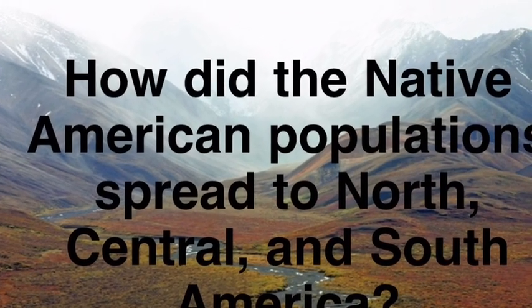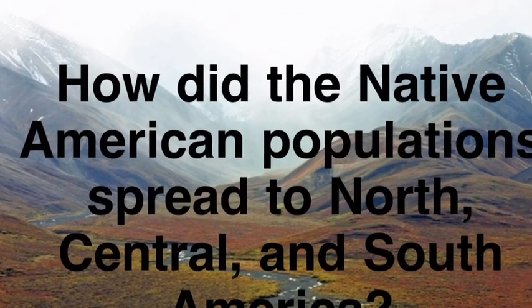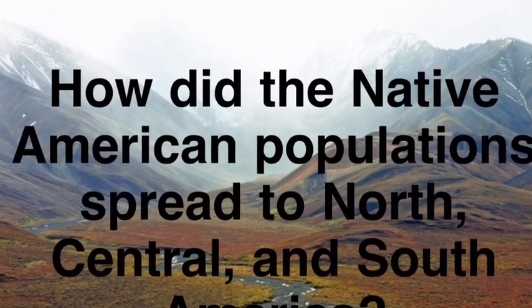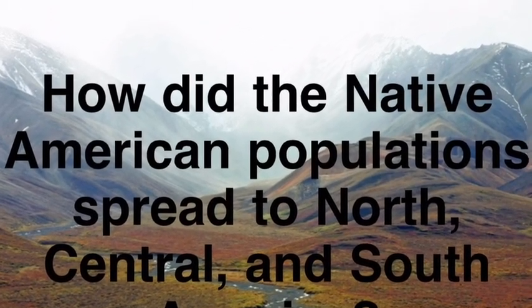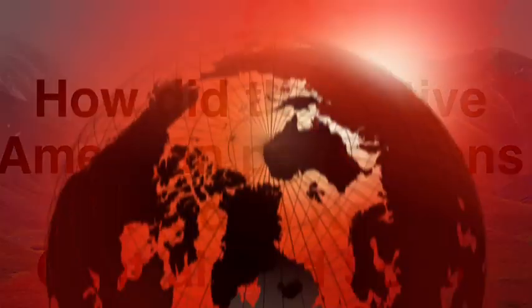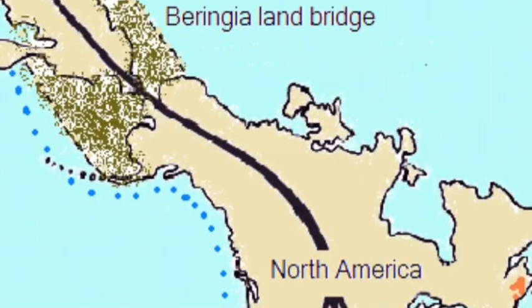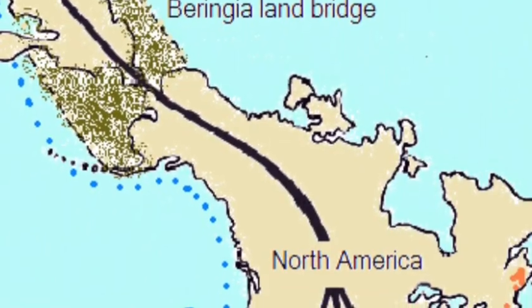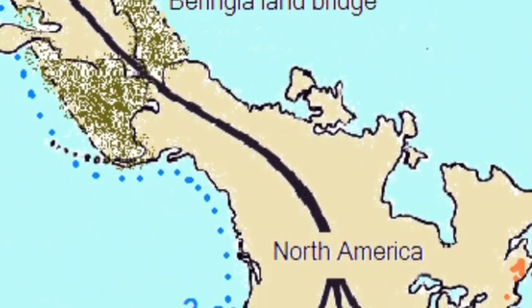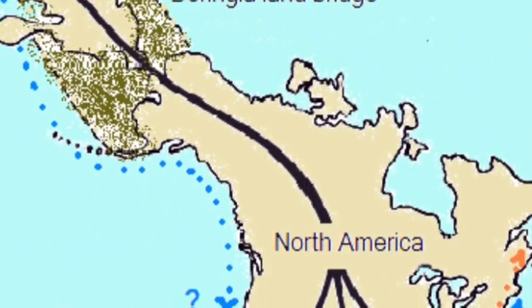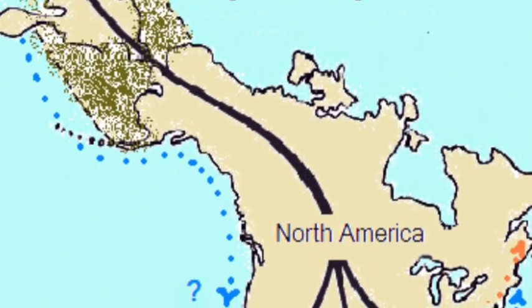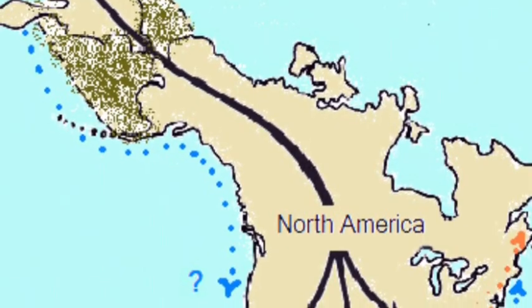How did the Native American population spread to North, Central, and South America? Historians believe that Native Americans crossed a land bridge to get here.